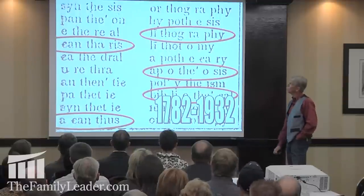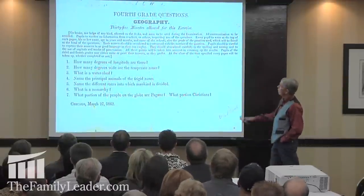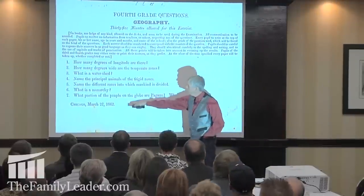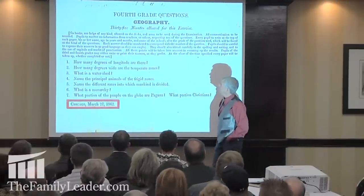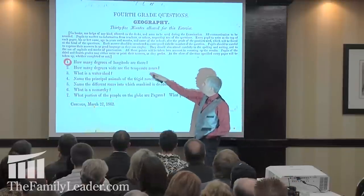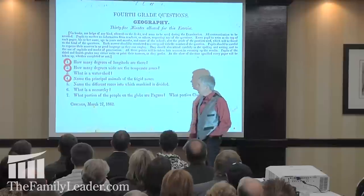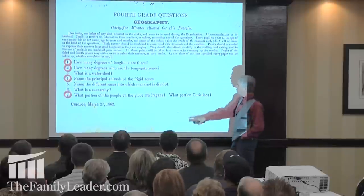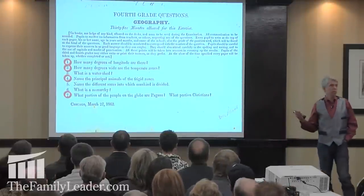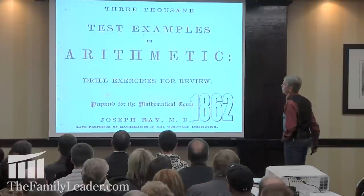How about a little fourth-grade geography test from Chicago, March 27, 1862? You get 35 minutes. Questions include: How many degrees of longitude are there? How many degrees wide are the temperate zones? Name the principal animals of the frigid zone. What portion of the people of the globe are pagan? What portion are Christians? That's fourth-grade public school in 1862.